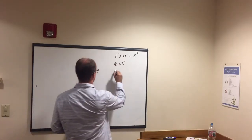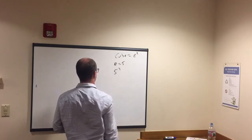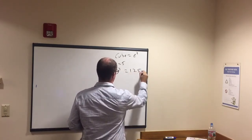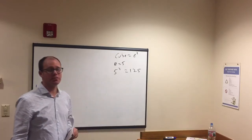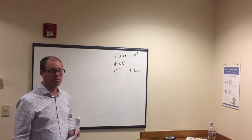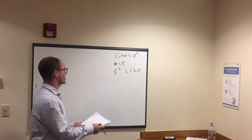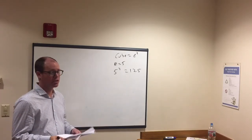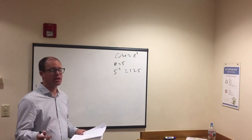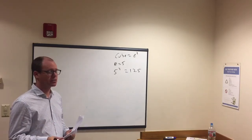Which equals 125, right? 5 times 5 is 25. 25 times 5 is 125. There would be your answer. If they gave us a side was 3, 3 to the third is 27, right? 3 times 3 is 9. 9 times 3, 27.